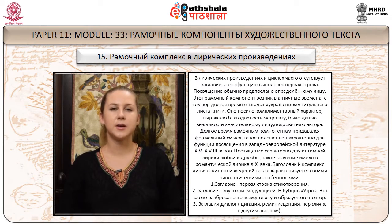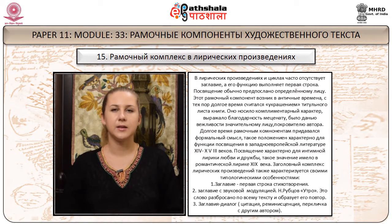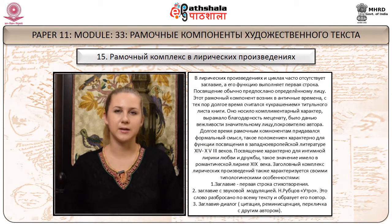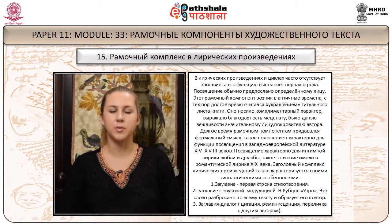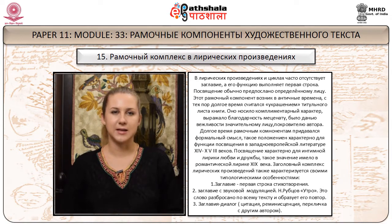Посвящение характерно для интимной лирики любви и дружбы – такое значение оно имело в романтической лирике XIX века. Заголовочный комплекс лирических произведений также характеризуется своими типологическими особенностями: заглавие-первая строка стихотворения; заглавие со звуковой модуляцией (например, «Утро» Рубцова – это слово разбросано по всему тексту и образует его повтор); заглавие-диалог, цитация, реминисценция, перекличка с другим автором.